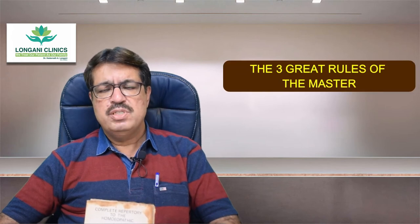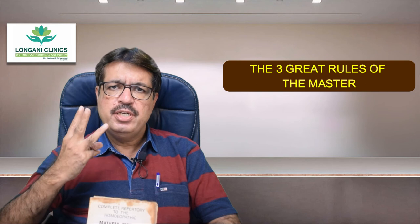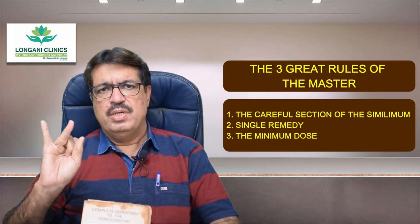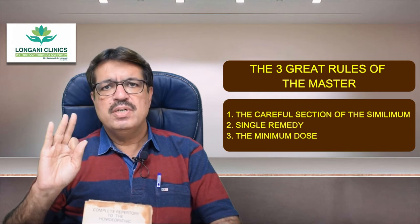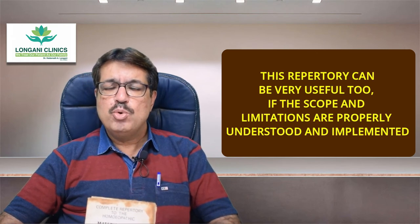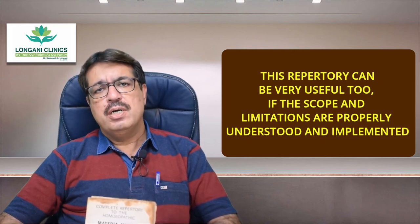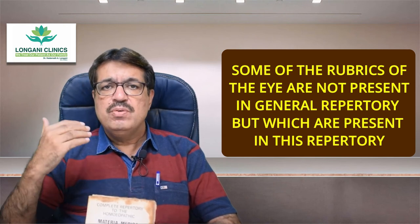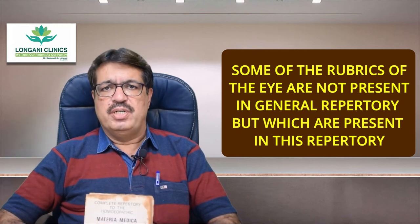The author states that if you want to obtain the highest benefit from homeopathy, you must faithfully follow the three great rules of the master. One: careful selection of the similimum; number two: a single remedy; the third one: a minimum dose. This repertory can be very useful if its scope and limitations are properly understood and implemented. You will sometimes find rubrics for the eye which are not even present in the general repertory.